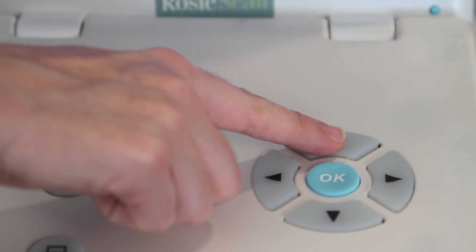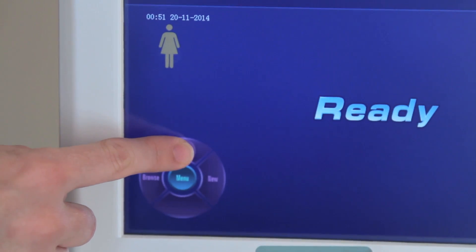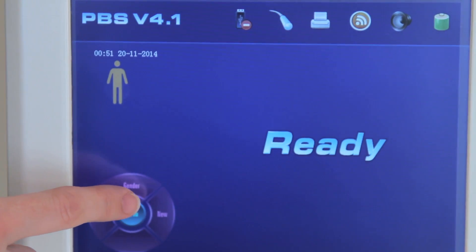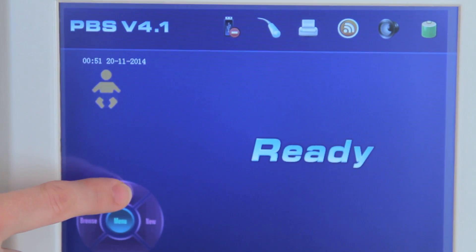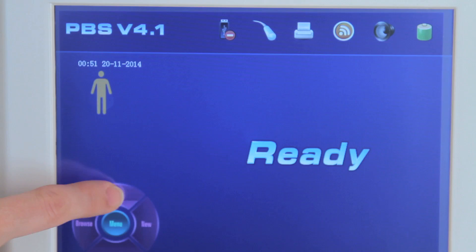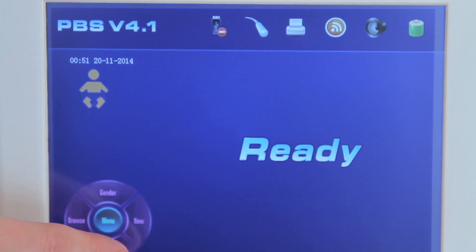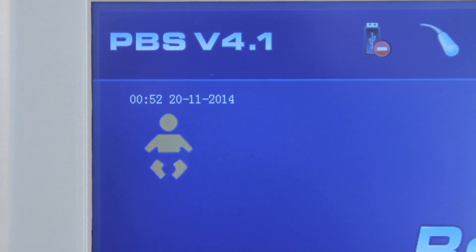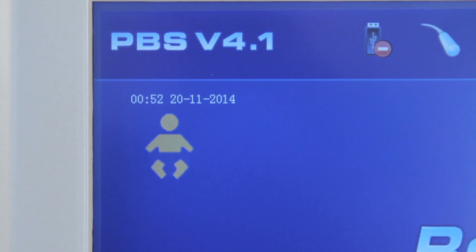Press the up directional key or touch the gender functional key to select gender. Select the male icon for male, the female icon for female, and the baby icon for pediatric. Pediatric mode is only effective to measure volumes that are less than 100 ml.